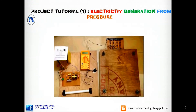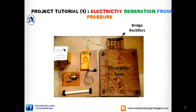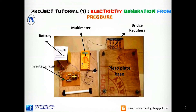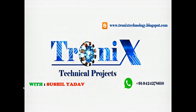After this theoretical explanation, we will now see how to convert this concept into a practical one. The components used are: a piezo plate base with attached piezo plates, bridge rectifiers connected in parallel, a multimeter, a rechargeable battery, an inverter circuit, and a small fluorescent tube light. Thank you, keep watching and subscribe for new innovative projects. Have a good day.